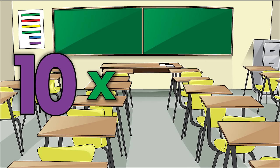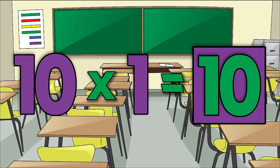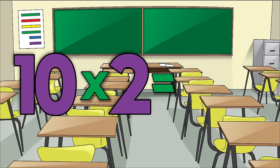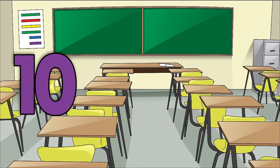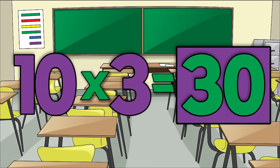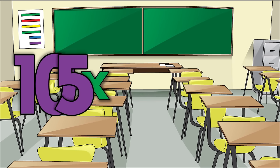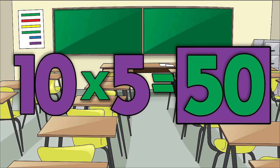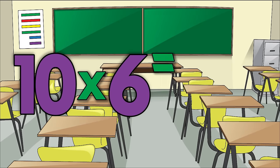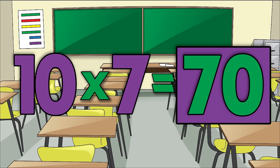Ten times one is ten. Ten times two is twenty. Ten times three is thirty. Ten times four is forty. Ten times five is fifty. Ten times six is sixty. Ten times seven is seventy.